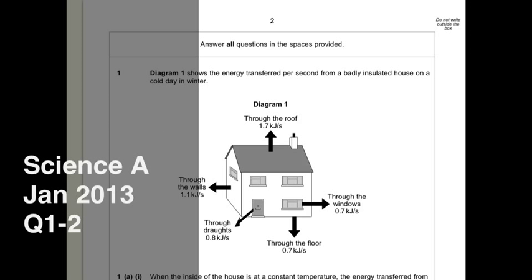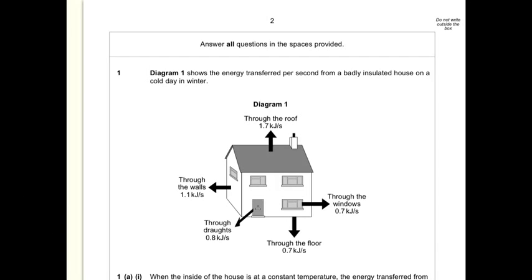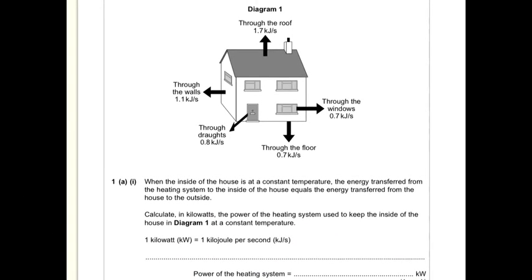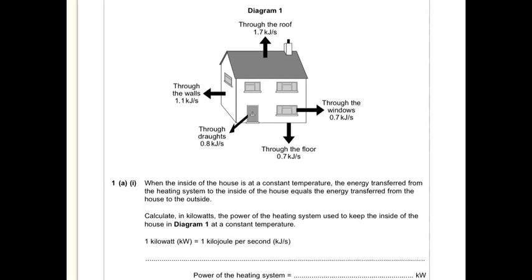Question 1. Diagram 1 shows energy transfer per second from a badly insulated house on a cold day in winter. You can see there's heat coming out in different ways. It says calculate in kilowatts the power of the heating system used to keep the inside of the house in diagram 1 at a constant temperature. So what we have to think about there is that the energy transferred from the heating system equals the energy transferred from the house to the outside. So you've got energy coming out there. All you need to do is add all that up.